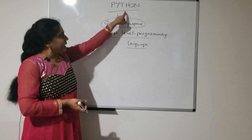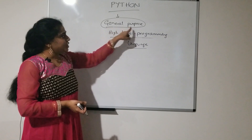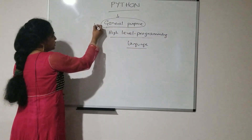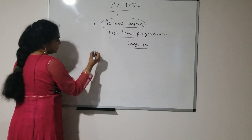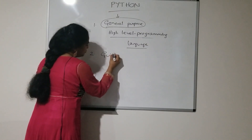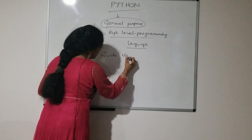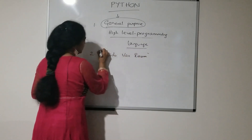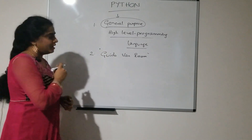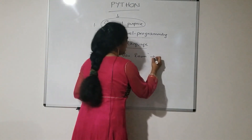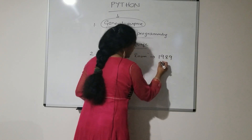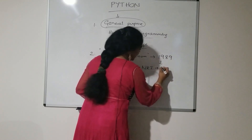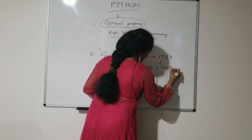So, Python is defined as a general purpose, high level programming language. Next, who introduced this language? Guido van Rossum — he is called the father of Python. He introduced this language in the year 1989, while he was working at NRI, the National Research Institute in Netherlands.